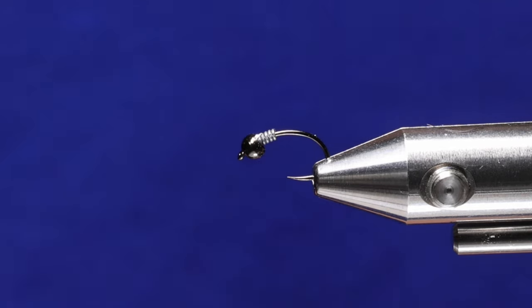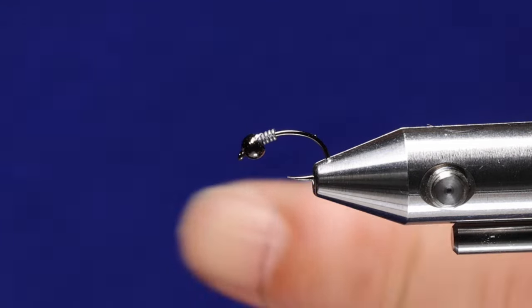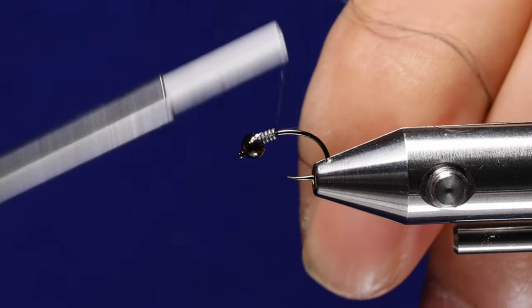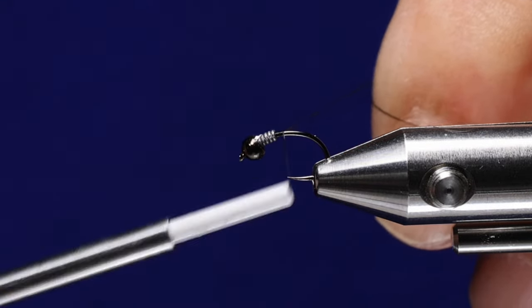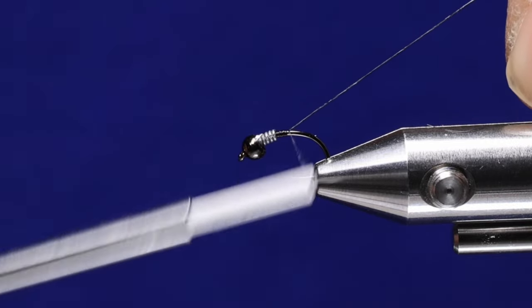I got 0.015 lead wire bracing the bead. And we're going to use Simplify 18-knot nano silk in black. I'm going to start the thread just behind the lead wraps.